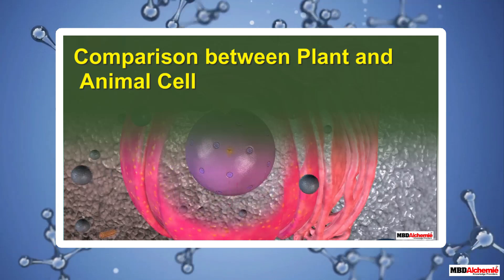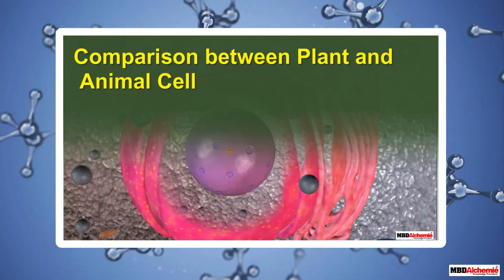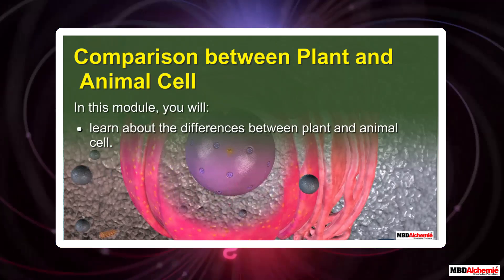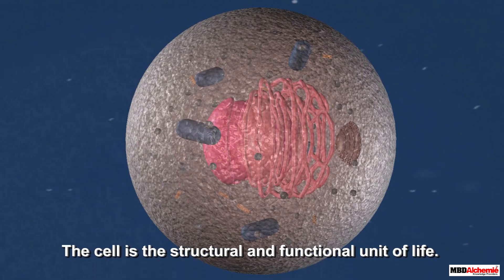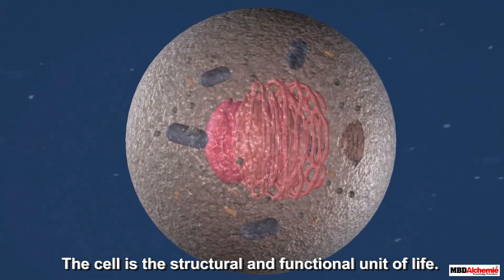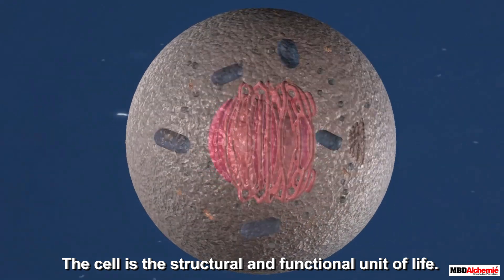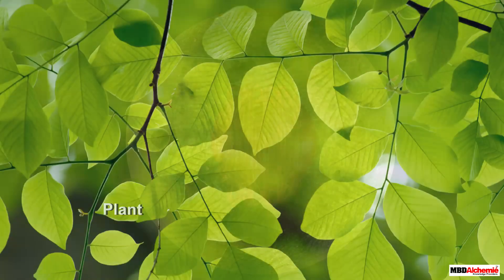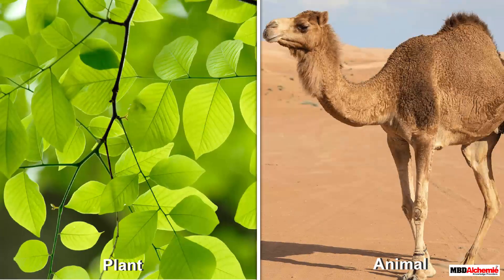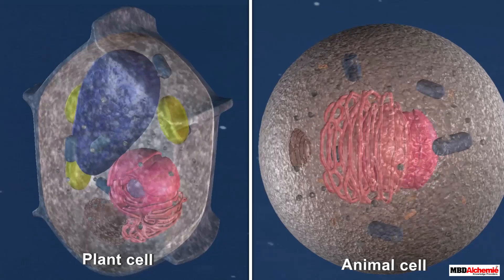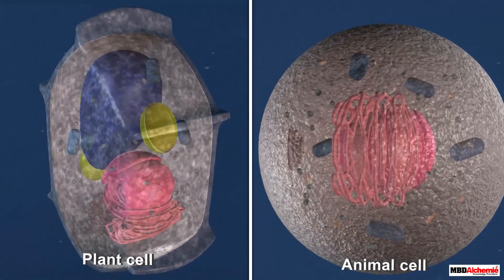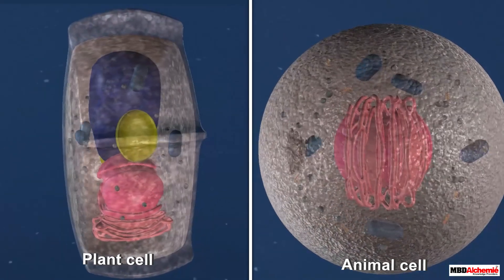Comparison between plant and animal cell. In this module you will learn about the differences between plant and animal cells. As we already know, the cell is the structural and functional unit of life. Both plants and animals are made of cells, however a plant cell and an animal cell are different from each other.